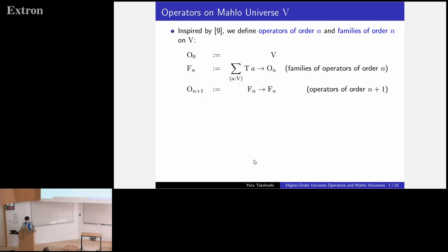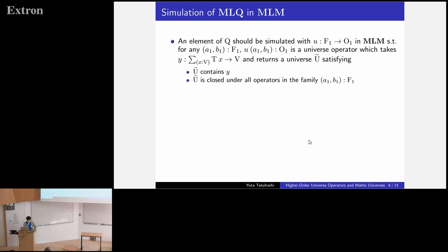For this purpose, let me give several definitions. Inspired by Palmgren's work, we define operators of order N and families of order N on V. But in this talk, we use only these four items. O0 is just V. And F0 is a type of family of sets in V. And O1 is a function space from F0 to F0. And F1 is a type of families of operators of order 1.